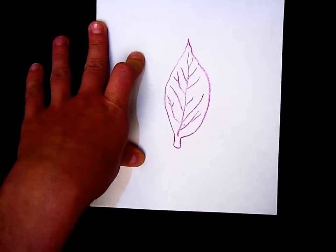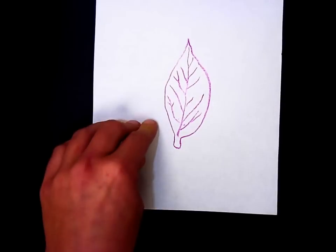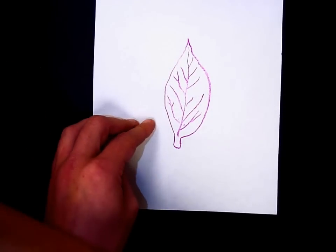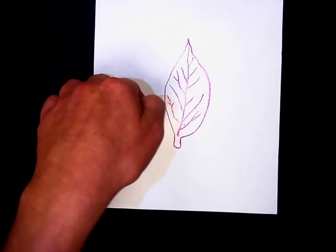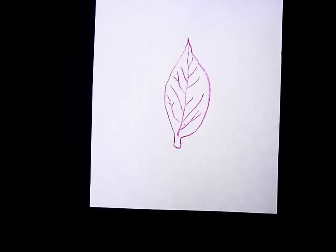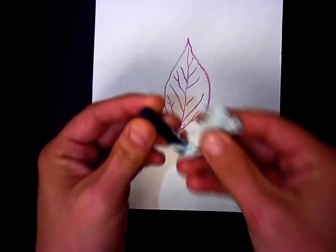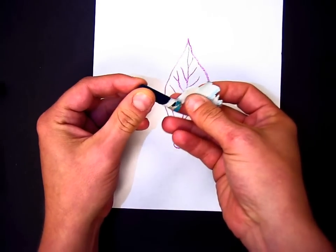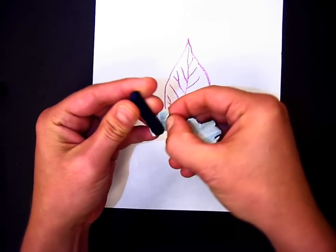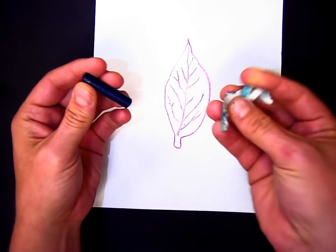Another element of art is color. We know fall leaves because of their color. On this project you need to use a variety of colors. I've already started peeling the paper off the crayon. Just peel it all the way off and make sure this goes into your tabletop trash can.